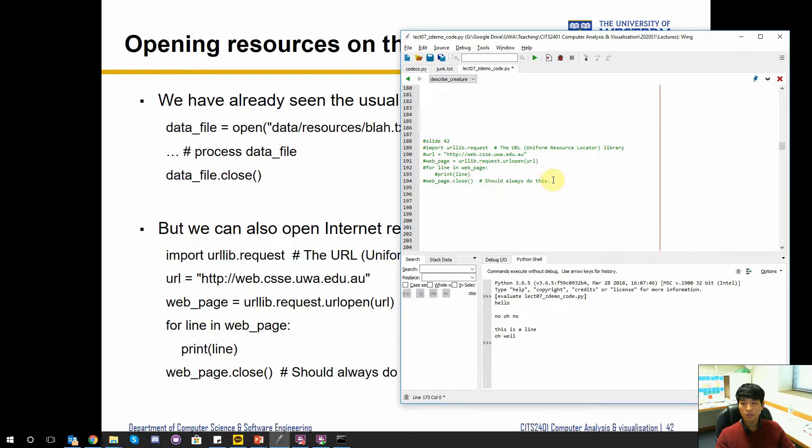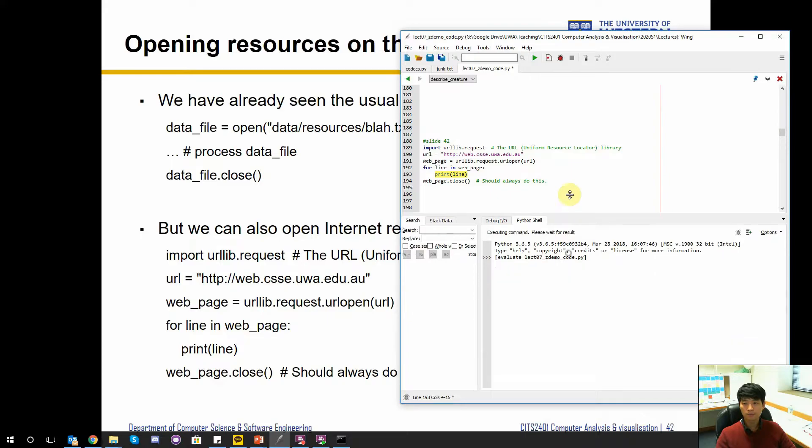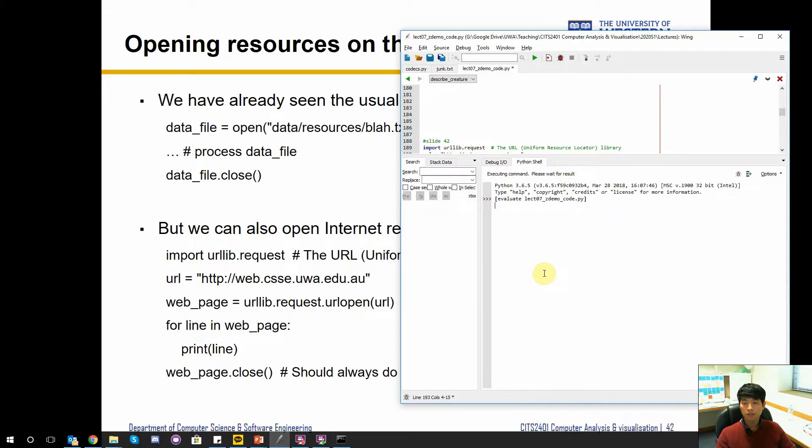So here it is. Import this library. I have set our department home page as the URL, and then we're going to open it. Essentially what we're just going to do is print each line, what the underlying code looks like. What this will be reading is the HTML content of the web page. So let's run that. This is going to be quite ugly.